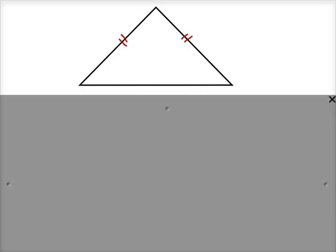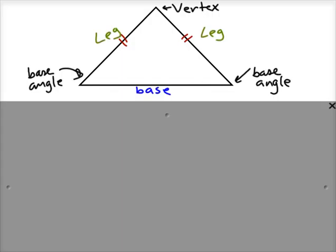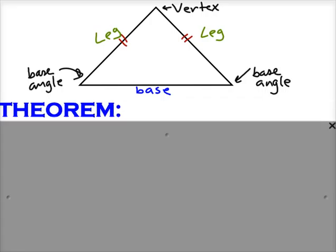Here we have an isosceles triangle. The two legs are shown in red, the base is shown in blue. The base angles are shown, the vertex is shown, and we have a theorem about isosceles triangles.